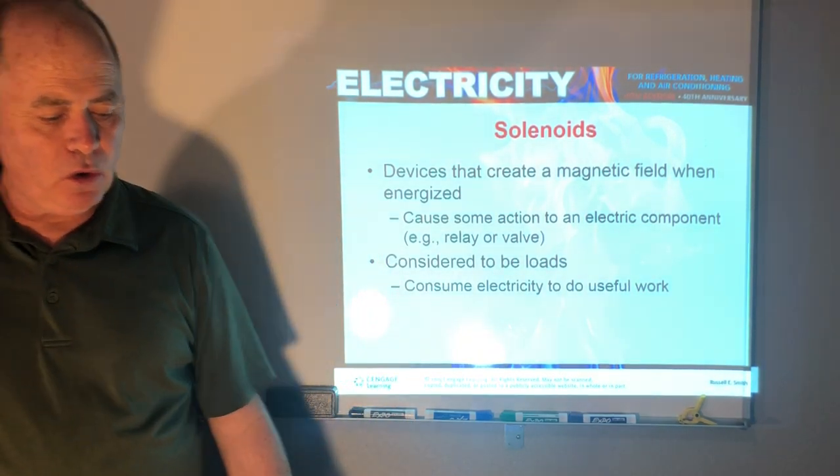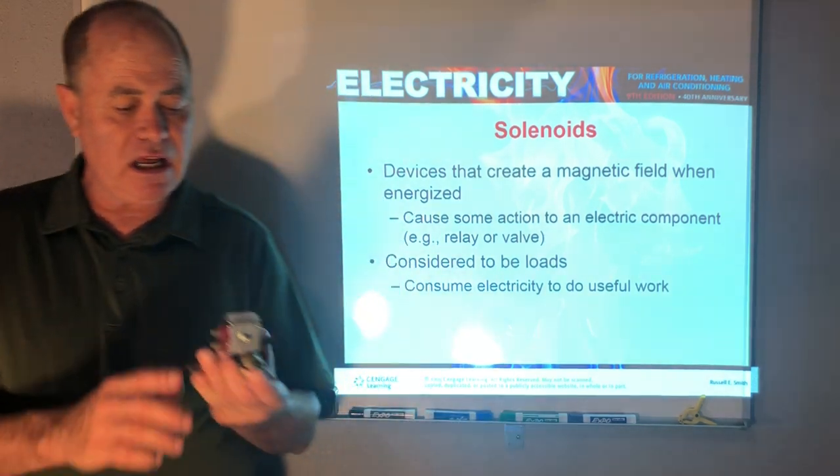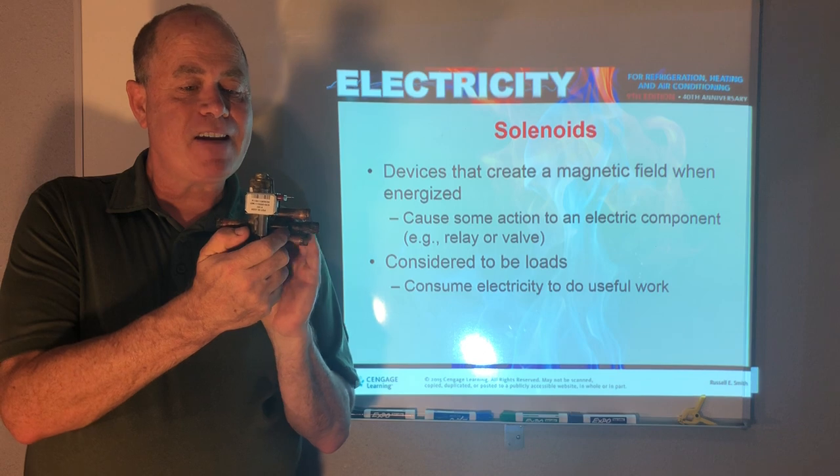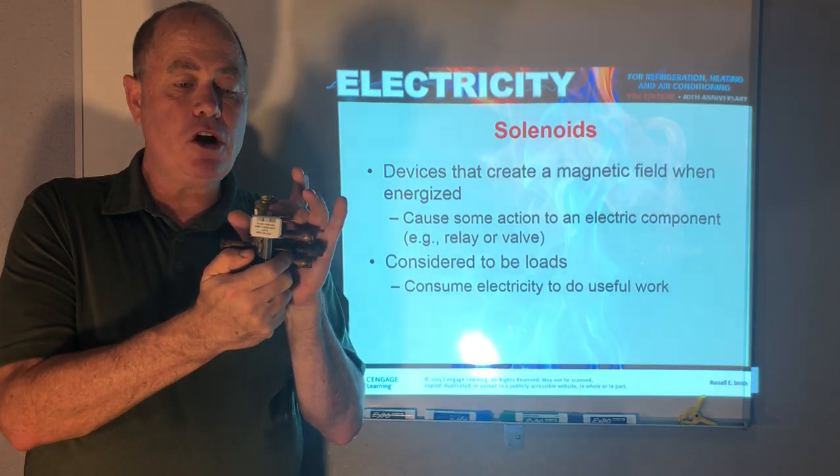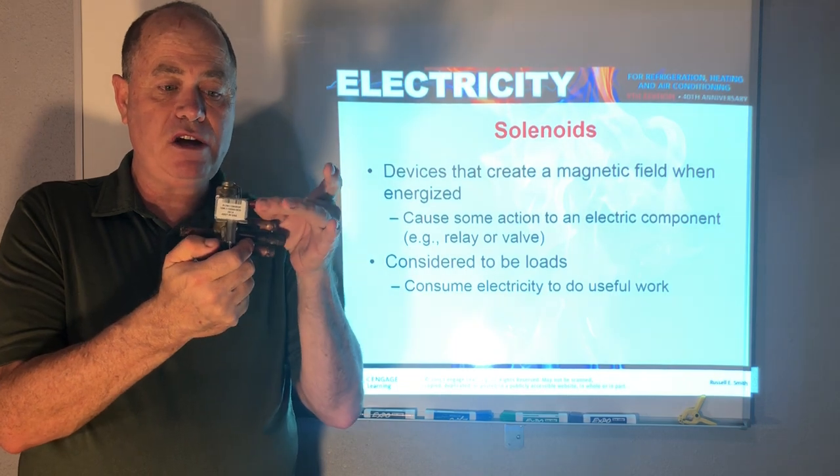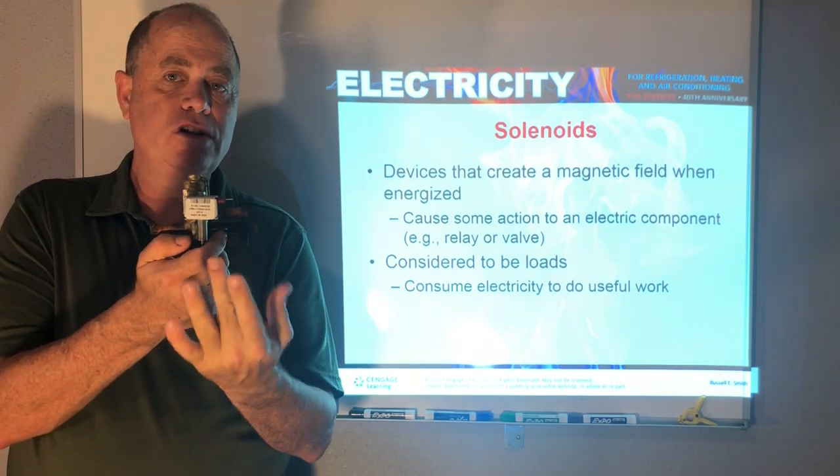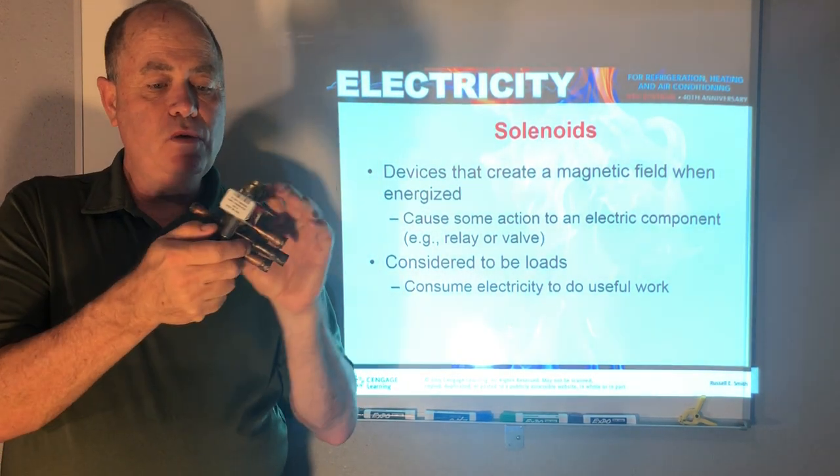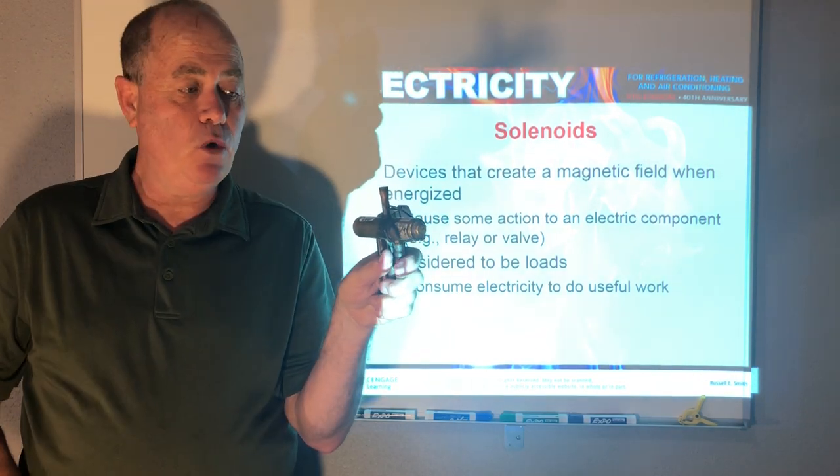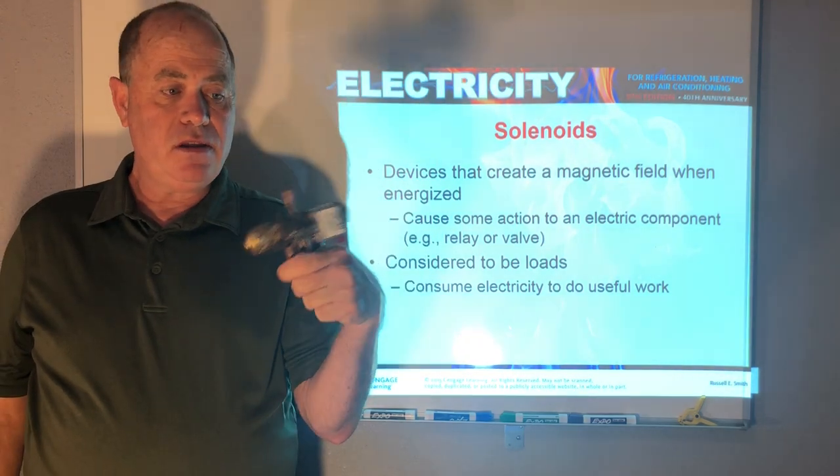Now solenoid coils are quite often used like this solenoid coil for a heat pump. It's called the reversing valve. And this is the solenoid coil. And then we energize this, a magnetic field will be created and will shift this inside to allow the refrigerant to flow in one direction or the other.